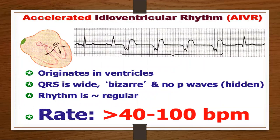Next is the accelerated idioventricular rhythm. It also originates in the ventricles and has a wide, bizarre QRS. Either there will be no P waves or the P waves will be hidden. The rhythm is irregular and your rate will be between 40 and 100. The key difference between this one and your idioventricular rhythm is going to be your rate.